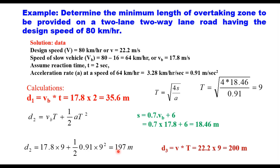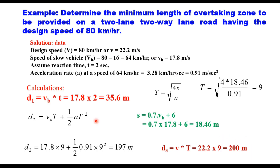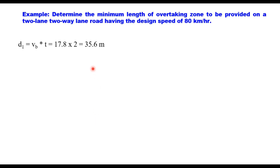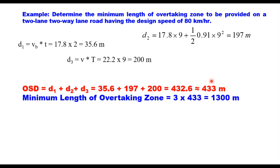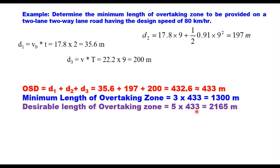d3 is the distance traveled by the opposing vehicle during time T. The opposing vehicle moves at design speed, 22.2 m/s, so d3 = 200 m. Summing the three distances: d1 = 35.6 m, d2 = 197 m, d3 = 200 m, giving an overtaking sight distance of approximately 433 m. The minimum length of the overtaking zone is three times OSD = 1300 m, and the desirable length is five times OSD = 2165 m, so the length should be between 1300 m and 2200 m.